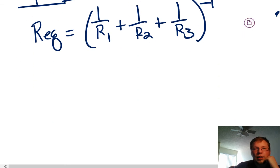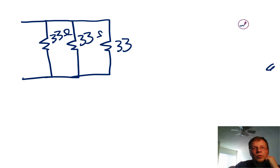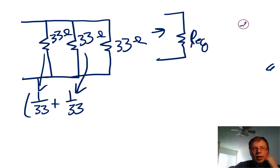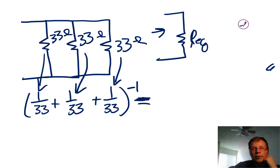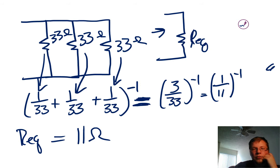Let's do a numerical example. Say we have three resistors, each of 33 ohms. We want to find our REQ. We plug things in: one over 33 plus one over 33 plus one over 33, and take the reciprocal. We find that equals three over 33 to the negative one, which equals 11 ohms. So our REQ is equal to 11 ohms.